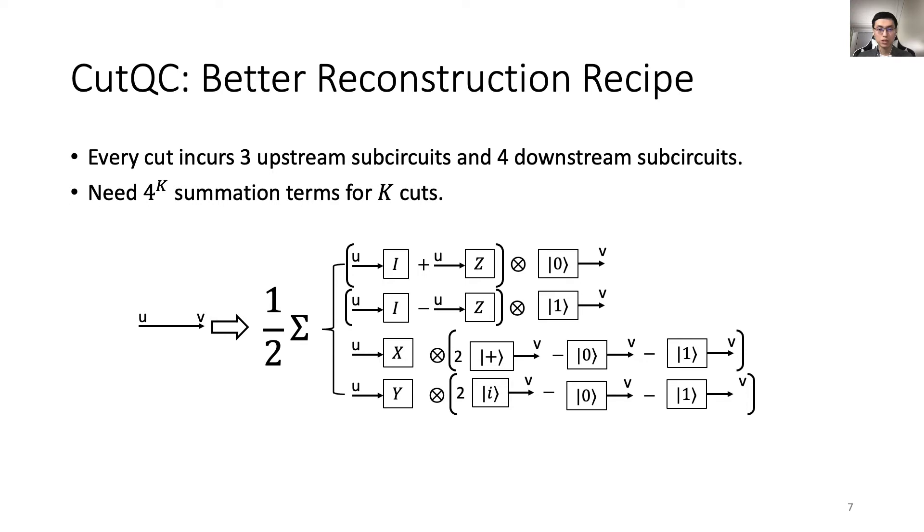Now, let's see an example of CutQC. We first improved the reconstruction recipe and made it exponentially faster than the prior theoretical work. Using our recipe, every cut incurs three upstream sub-circuits and four downstream sub-circuits. Instead of 8^k summation terms, only 4^k is now required. Specifically, with each cut to a quantum edge, we measure or initialize different sub-circuits. Four pairs of Kronecker products are computed and added to produce the uncut output.